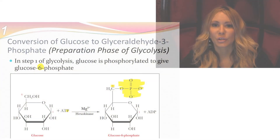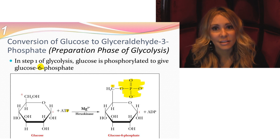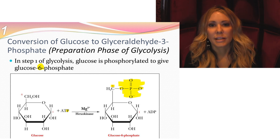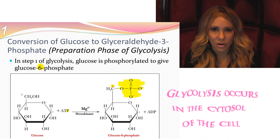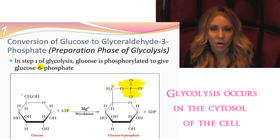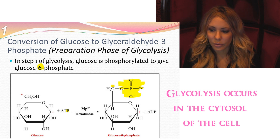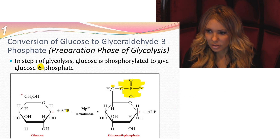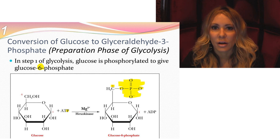Hi, my name is Dr. Bon Blossman and I will be covering glycolysis with you. There are 10 steps of glycolysis, occurring in the cytosol of the cell. All of the enzymes for glycolysis are in the cytosol, and as glucose comes into the cell, that is where it will participate in its own breakdown. Let's get right into it and go over the steps one by one.